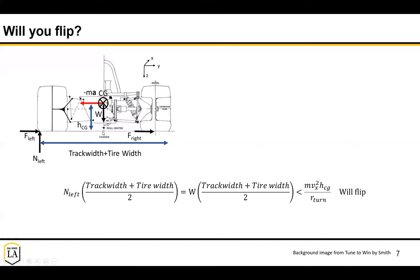We have two terms: the normal force times half the track width plus the tire width, causing the vehicle to rotate clockwise; and the minus MA vector acting at the height of the CG, causing it to rotate counterclockwise. If the acceleration v squared over r creates a moment greater than the restoring moment from the wheel contact, your vehicle will flip.